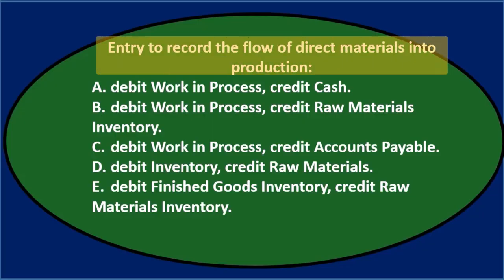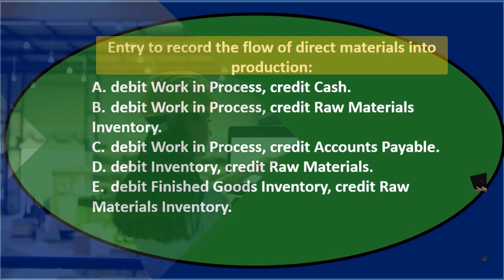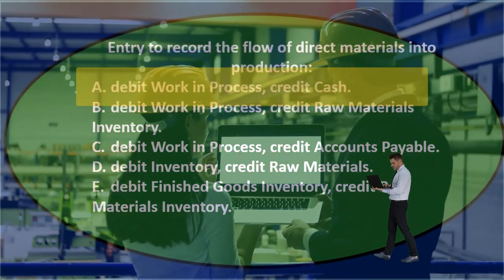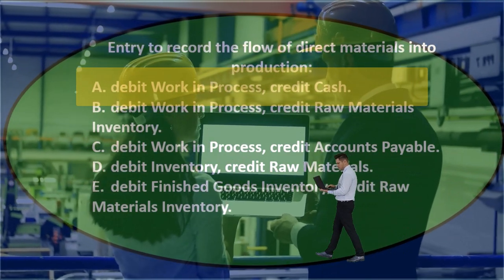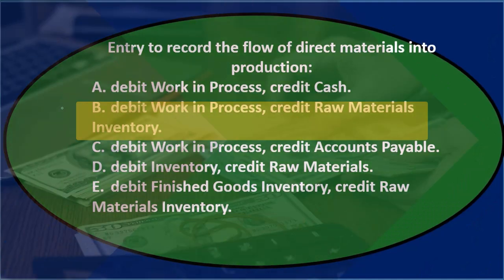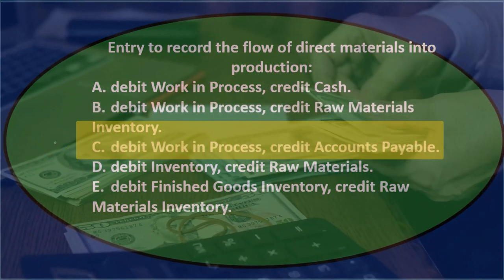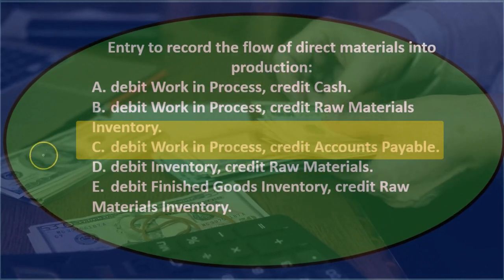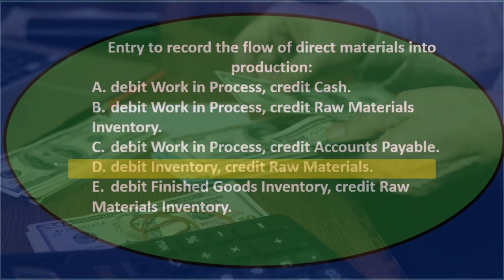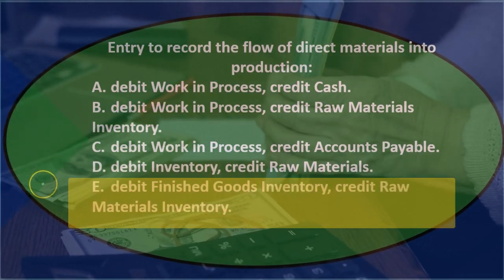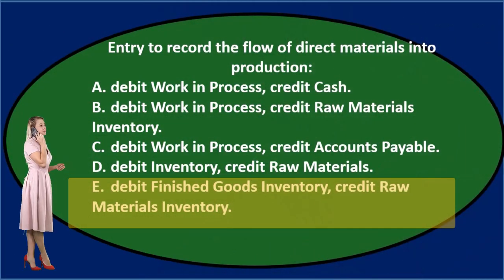Entry to record the flow of direct materials into production. A: Debit work in process, credit cash. B: Debit work in process, credit raw materials inventory. C: Debit work in process, credit accounts payable. D: Debit inventory, credit raw materials. E: Debit finished goods inventory, credit raw materials inventory.